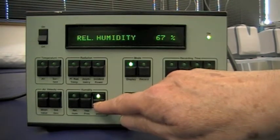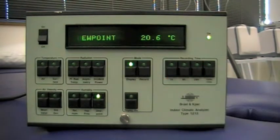And if we look at the dew point, we can see that's 20.6 degrees centigrade. So that means at that temperature water will condense out and you will get droplets forming.